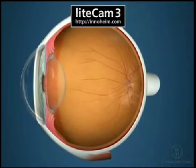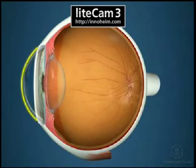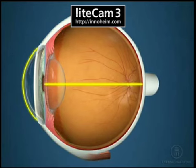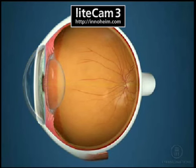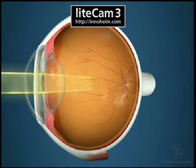Hyperopia occurs when the corneal shape is too flat or when the eye is too short. This causes light to come to a focus behind the retina.